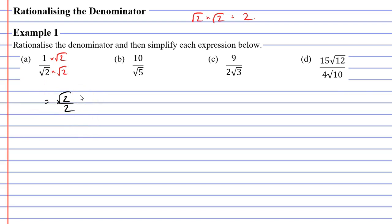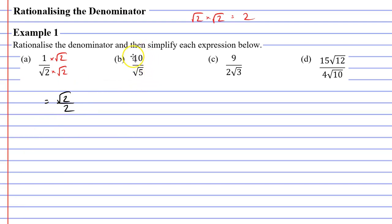Now, some of you might be saying, well, sure, we rationalized the denominator, but now our numerator is a surd, and that used to be a whole number — what's the point of this? This actually comes in handy when you're trying to add or subtract fractions, because when you add or subtract fractions, you need to make the denominators the same. So, it really helps when your denominator is a whole number. Anyway, let's now move on to question B.